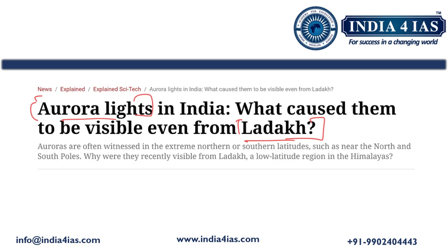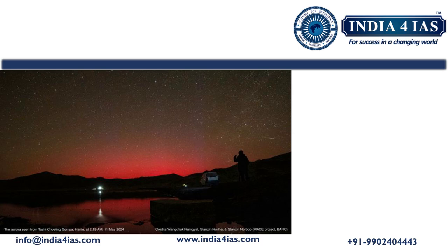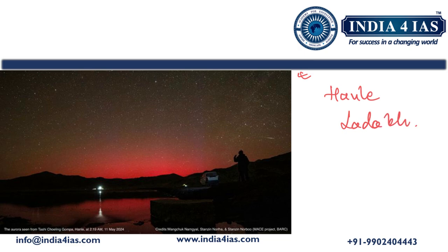Usually aurora lights are visible at the poles — both north and south — but in this case they were visible from Ladakh. This image shows the aurora seen in Ladakh in red hues. The phenomenon was observed on May 10th night, between Friday and Saturday midnight. Astronomers from the Indian Institute of Astrophysics captured it using sky cameras at the Indian Astronomical Observatory located at Hanle, Ladakh.